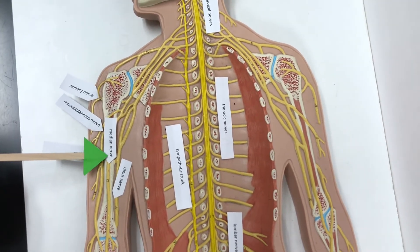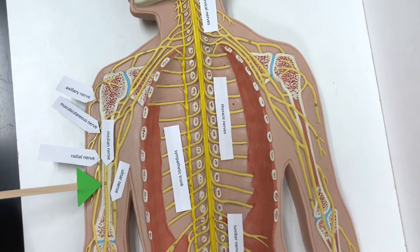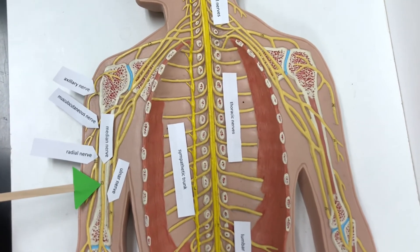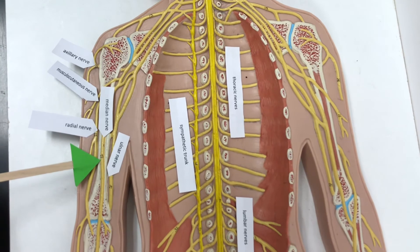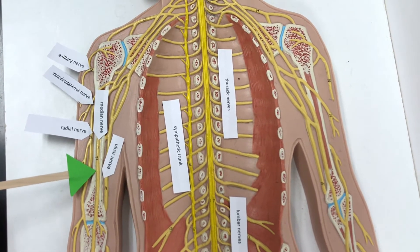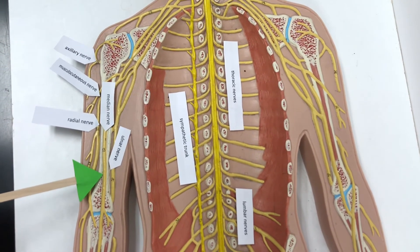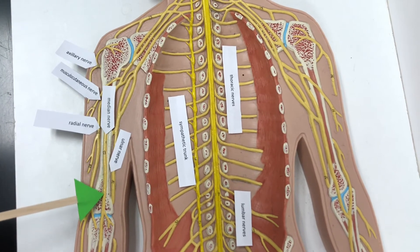We have the median nerve, which innervates most of the anterior forearm muscles like the flexors and pronators. Note that it's median and goes down the middle.